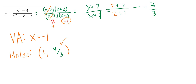To review: I factored everything, looked at my excluded values, and canceled. The things that were still an excluded value after canceling — those are my vertical asymptotes, negative 1 in this case. The things that after canceling were no longer excluded — 2 in this case — that led to a hole, specifically the x value of a hole. To get the y value, I plug 2 back into the simplified equation, not the original, because the original gives 0 over 0. I get 4 over 3.